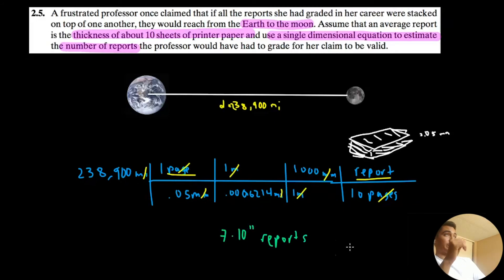That means this girl graded 768 billion reports. Billions! A billionaire? Like with a B? My girl, is you okay? Is you good? Because I wanted to know.